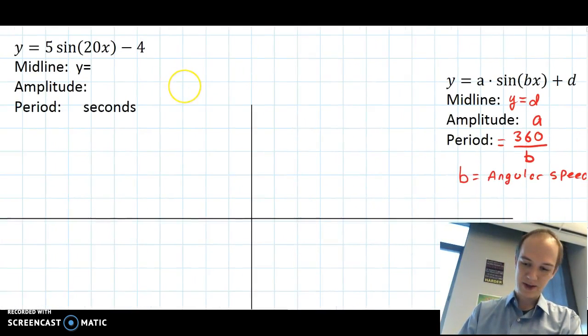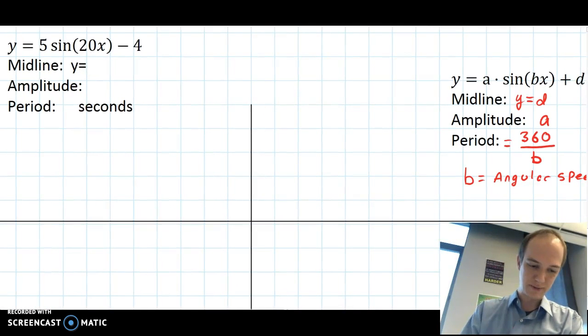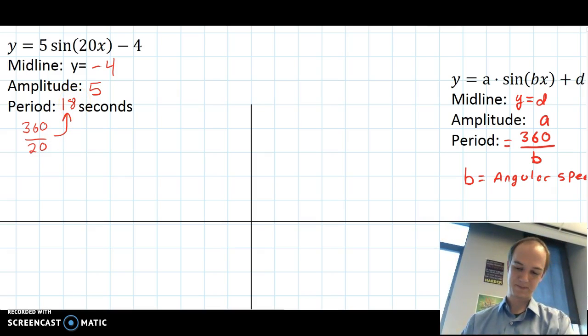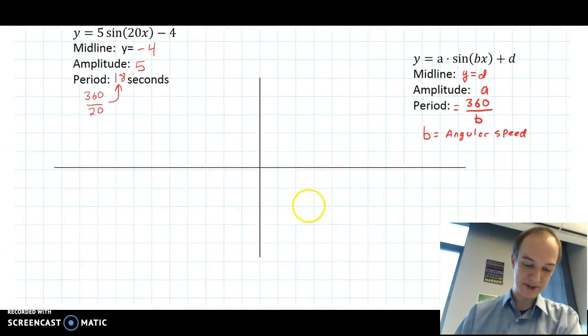And now we're going to go look at the equation I've given you. So the midline is going to be at y equals negative 4. The amplitude is going to be 5 units. And the period is whatever 360 divided by 20 is. So that's going to be 18 seconds. Okay.